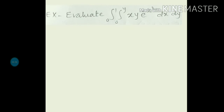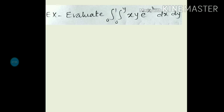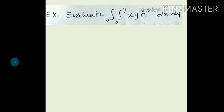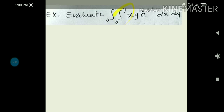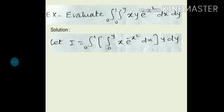Now we will solve one problem where the order of integration is with respect to x first. See the question: integration from 0 to 1 and 0 to y of x·y·e^(−x²) dx dy. First, decide the order of integration. The inner limits contain y, so these are the limits of x. This means we integrate with respect to x first, and y becomes a constant in that integration.